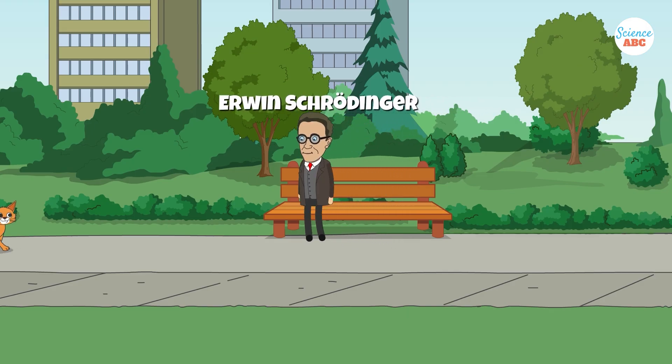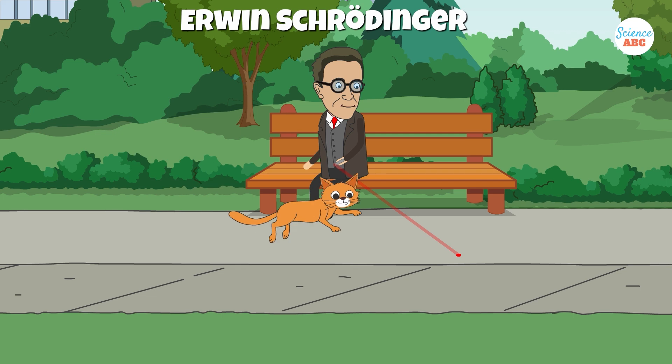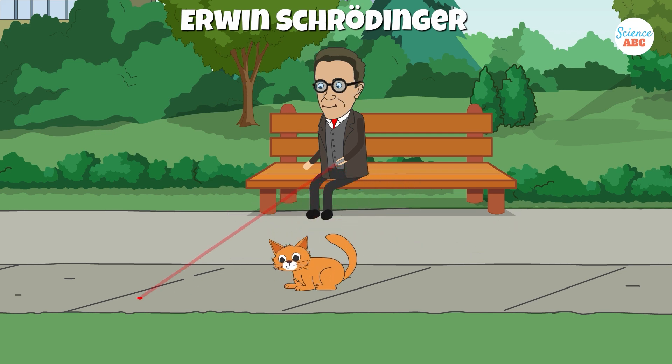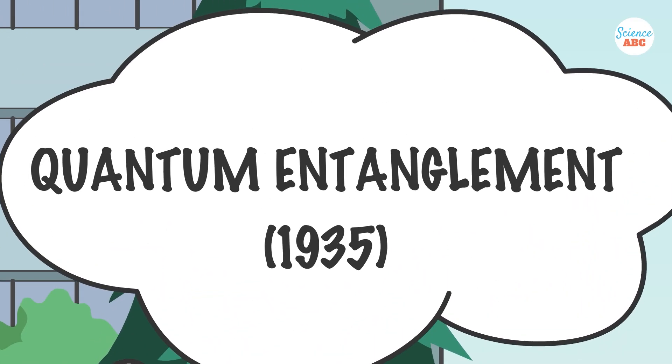Erwin Schrodinger, an Austrian theoretical physicist, was a key figure in the early development of quantum mechanics. He's also credited with coining the term quantum entanglement in 1935.